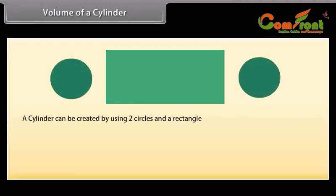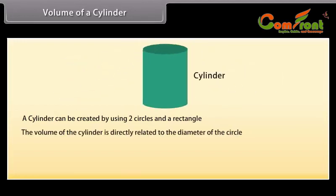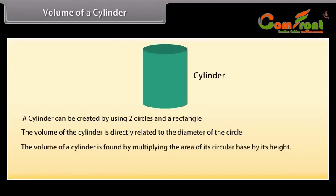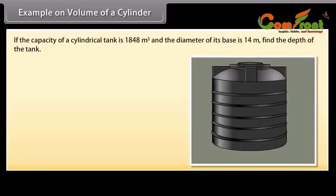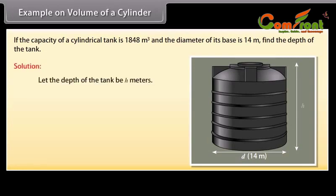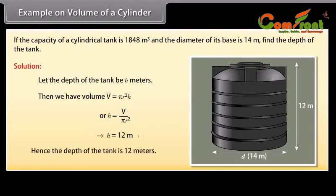A cylinder can be created using two circles and a rectangle. The volume of a cylinder is directly related to the diameter of the circle and is found by multiplying the area of its circular base by its height: V = πR²H. Example: If the capacity of a cylindrical tank is 1848 m³ and the diameter of its base is 14 m, find the depth. Let the depth be H meters. Then H = V / (πR²) = 12 meters. Hence the depth of the tank is 12 meters.